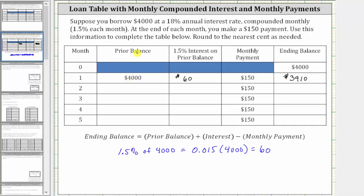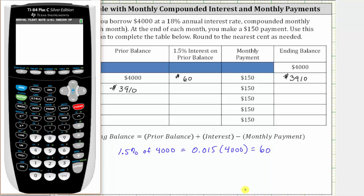The prior balance for month two is $3,910. Now during month two, you are charged 1.5% interest on $3,910. Let's use the calculator and determine 1.5% of 3,910. We convert 1.5% to a decimal, which is 0.015, and then we have times 3,910. The interest during month two is $58.65.